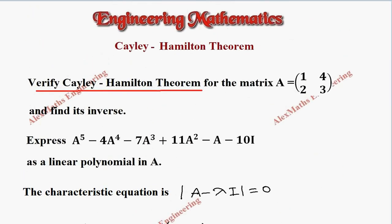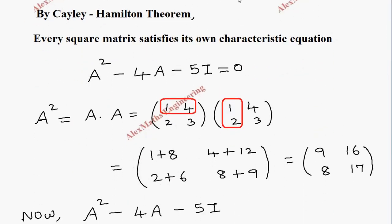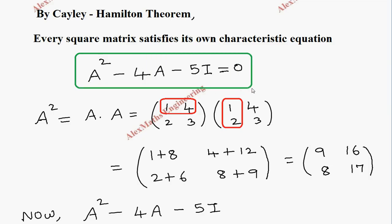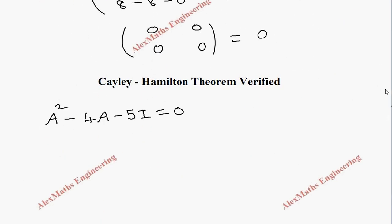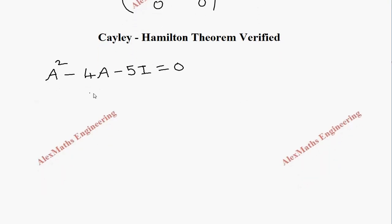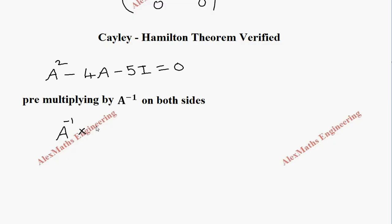Now the second part of the question: we have to find the inverse of A. We are going to use the characteristic equation and Cayley-Hamilton theorem. We already have A squared minus 4A minus 5I equal to 0. We are going to multiply A inverse on both sides, giving A inverse times A squared minus 4A minus 5I equal to A inverse times 0.